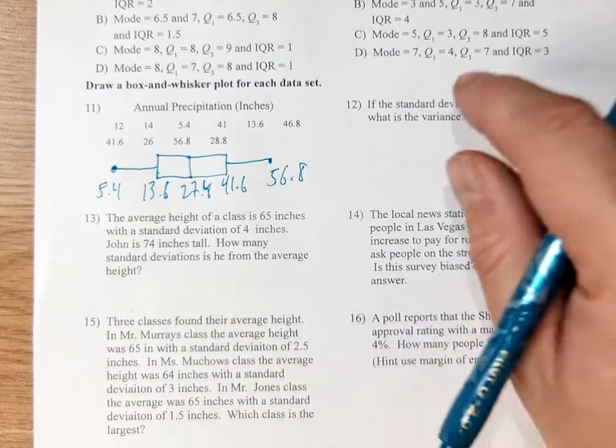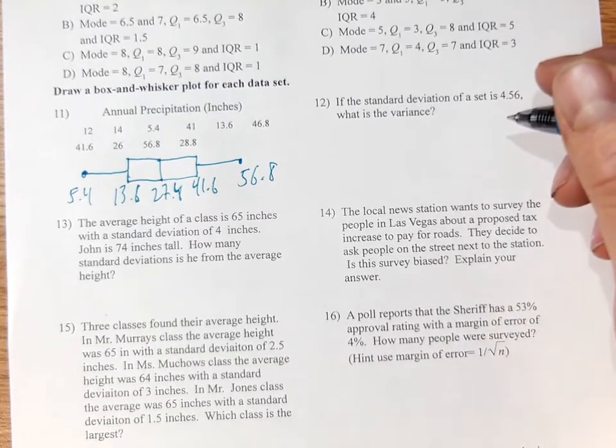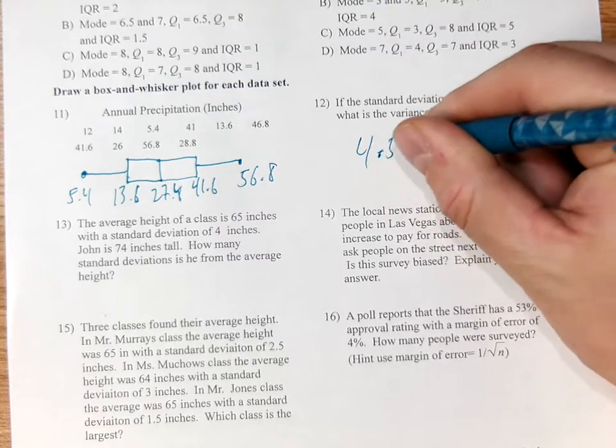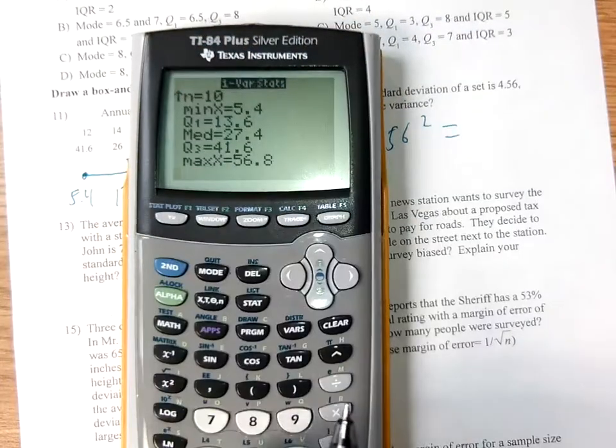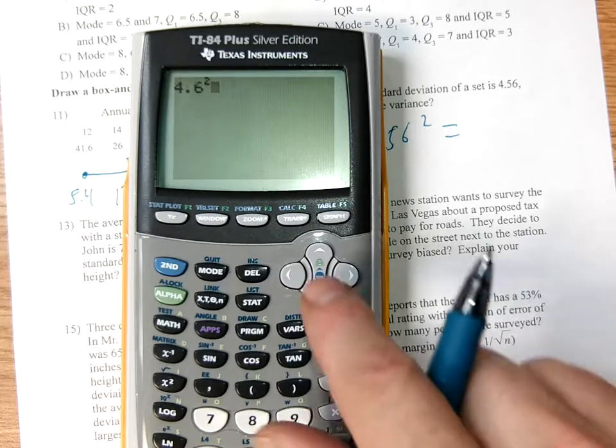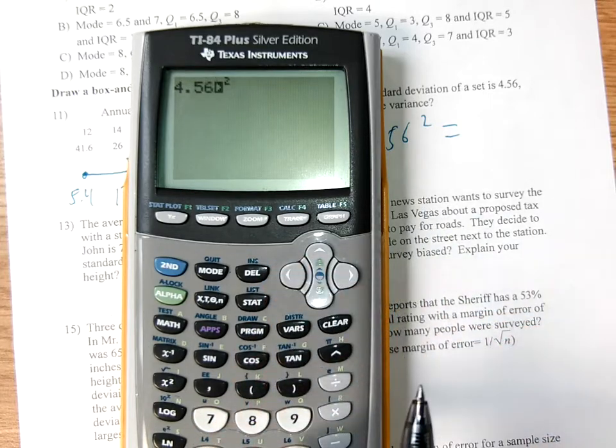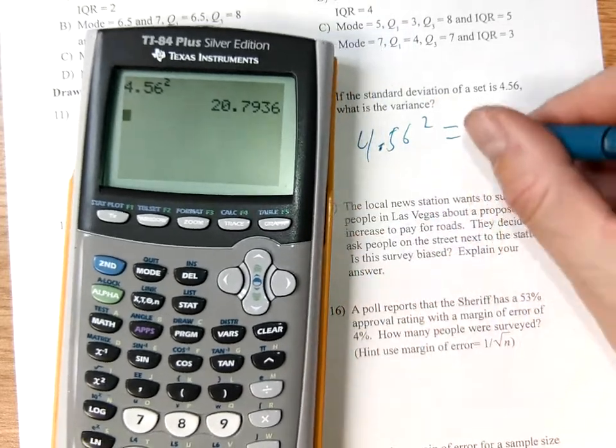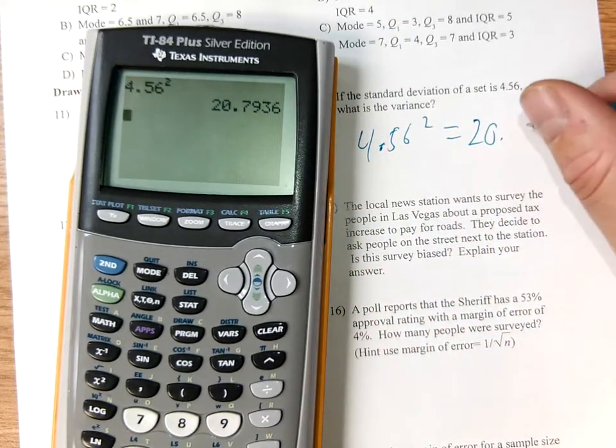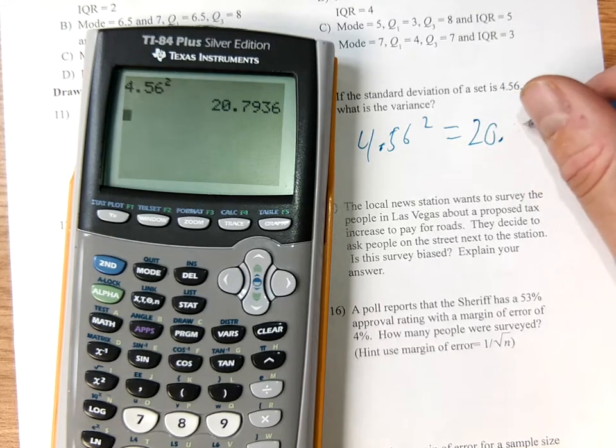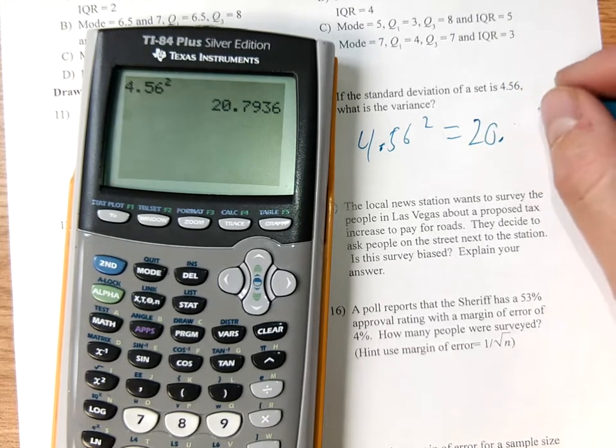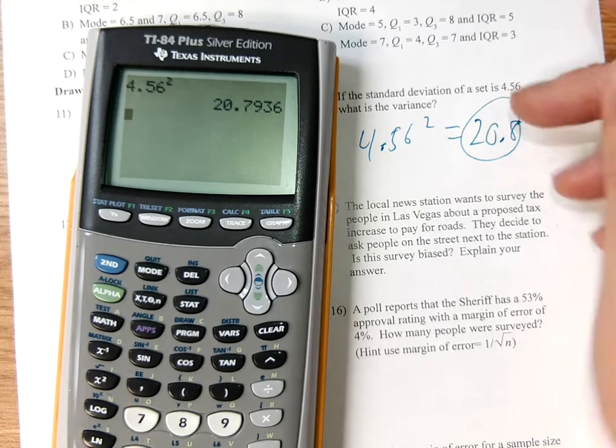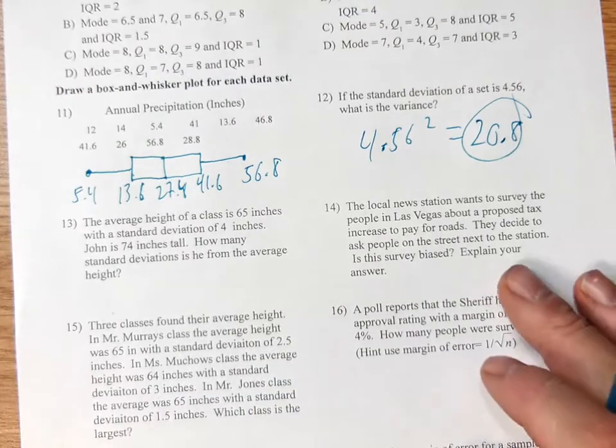So remember on number 12, the standard deviation is the square root of the variance. So if I square this, I will get the variance. 4.56 squared. So why do we use standard deviation instead of variance? Sometimes variance is negative, sometimes it's positive, so we use standard deviation so that it's always a positive value. And as we round to the tenth here, 20.8.